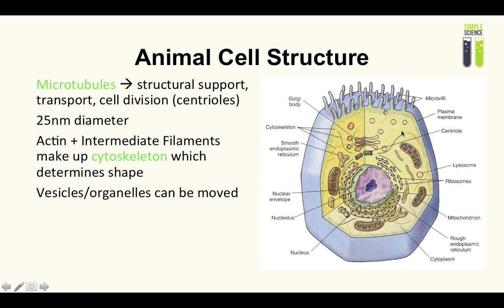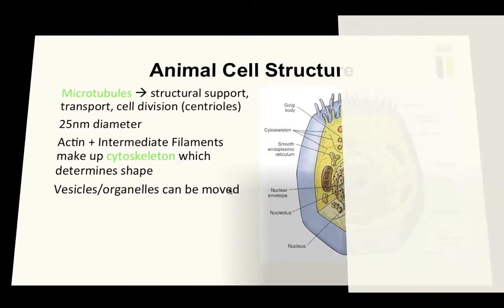Why are microtubules important? They make up the cytoskeleton which determines the shape of the cell. Here I've summarized the function of microtubules: structural support, so the cytoskeleton; transport, so vesicles and organelles can be moved along the microtubule; and cell division. The centrioles, so microtubules make up centrioles and these centrioles form these things called spindle fibers in which chromosomes line up during nuclear division.